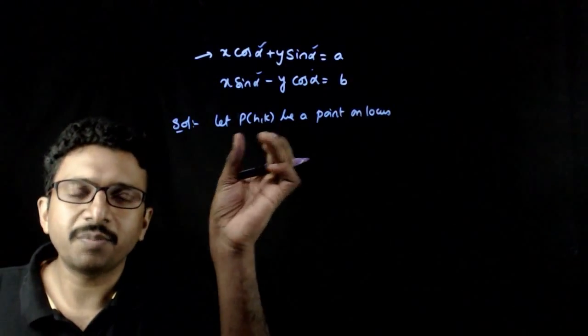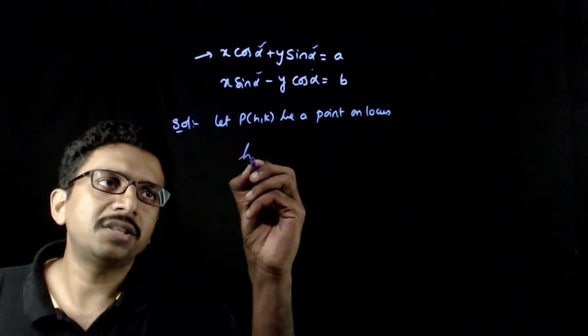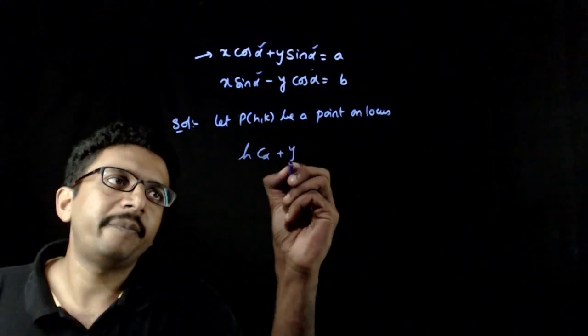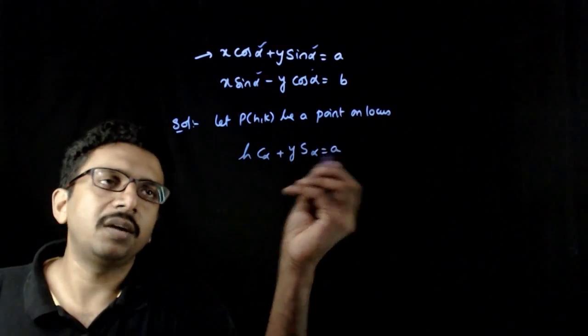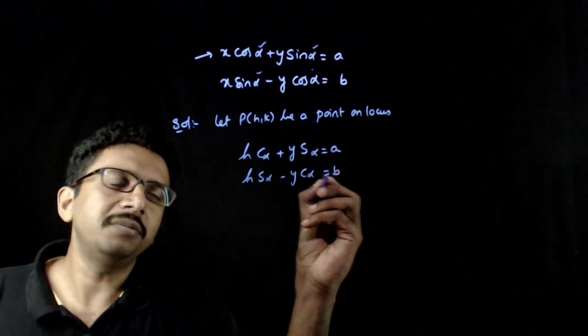If P(h, k) is a point on the locus, this h, k has to satisfy both the equations. So h cos alpha plus k sin alpha should be equal to a, and h sin alpha minus k cos alpha is equal to b.